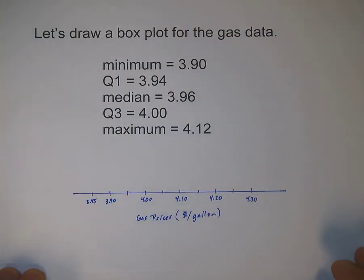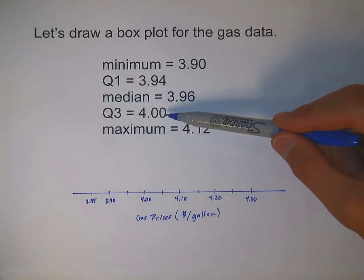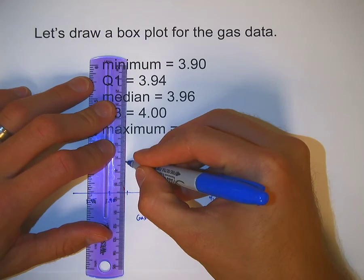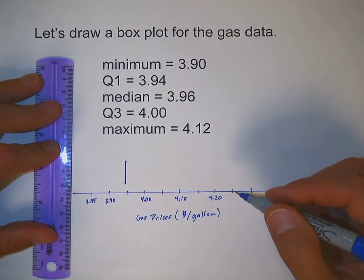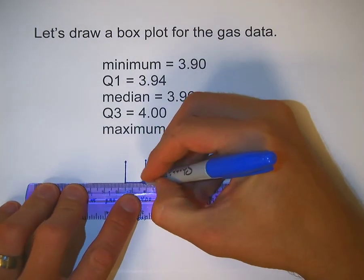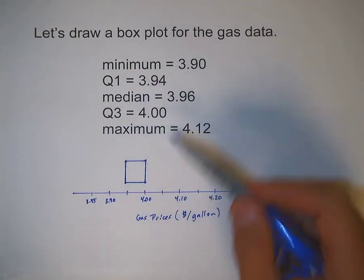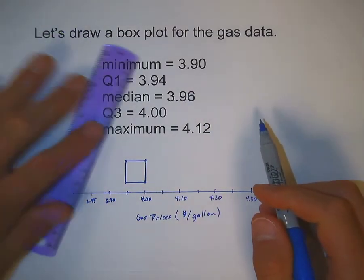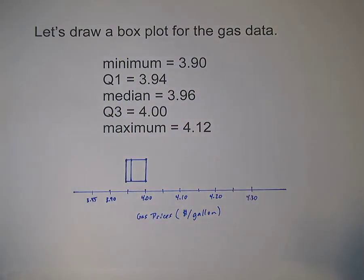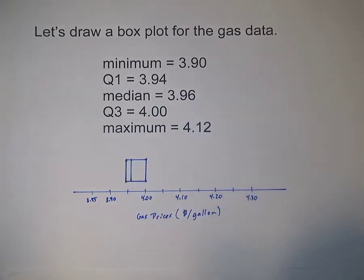Now I'm going to go about making my box and whisker plot. The box portion goes from Q1 to Q3. Q1 is at $3.94, so that's going to be slightly to the left of $3.95 — I'm going to make a vertical bar there. Q3 is at $4.00, so I'll make a vertical bar there, and then connect them to make a box or rectangle. The median always goes through the middle of the box wherever it matches up. The median is $3.96, so I'm going to draw a vertical line representing the median right through this box. If your median happens to be the same as Q1 or Q3, you don't draw that line — it'll just be assumed the median is right on top of either Q1 or Q3.